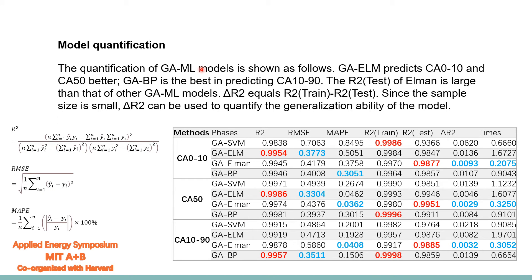This is the model qualification section. We use R-squared, RMSE, and MAPE to evaluate the models. We want R-squared equal to 1 and RMSE and MAPE equal to 0 for the best model. The results show that certain models — highlighted in red — perform best. The best model achieves R-squared close to 1 and RMSE and MAPE close to 0.